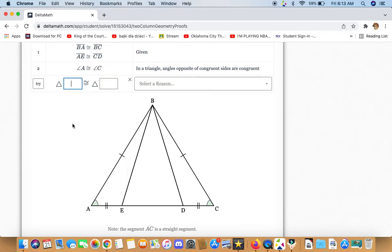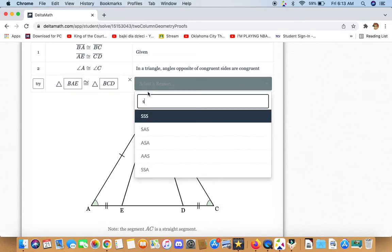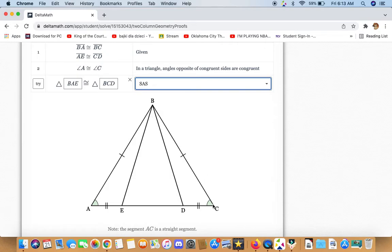We can also say that triangle BAE and triangle BCD are congruent to each other because of side-angle-side.